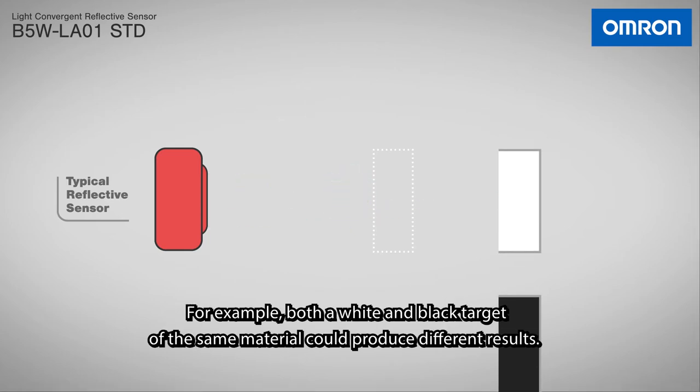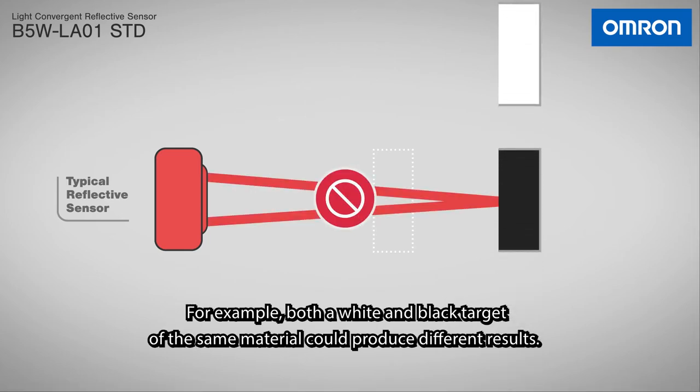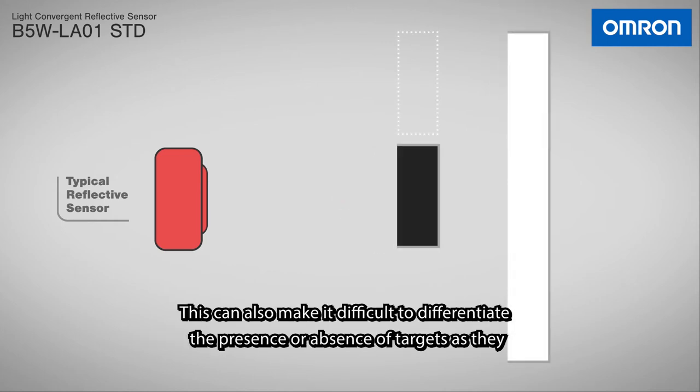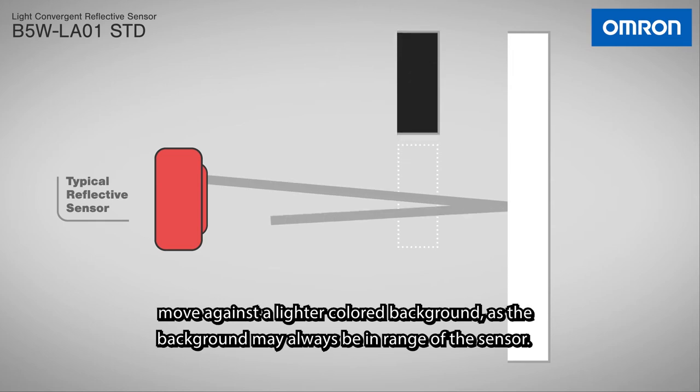For example, both a white and black target of the same material could produce different results. This can also make it difficult to differentiate the presence or absence of targets as they move against a lighter colored background, as the background may always be in range of the sensor.